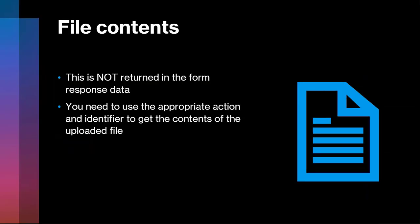The file contents are not part of the form response. When the form response is submitted and we get that data, it's basically just telling you where the file is — it's not giving you the file itself. We need to use the appropriate action in Power Automate with some identifier to get the contents of the uploaded file. From the parse JSON, we got the file name and something called an ID.